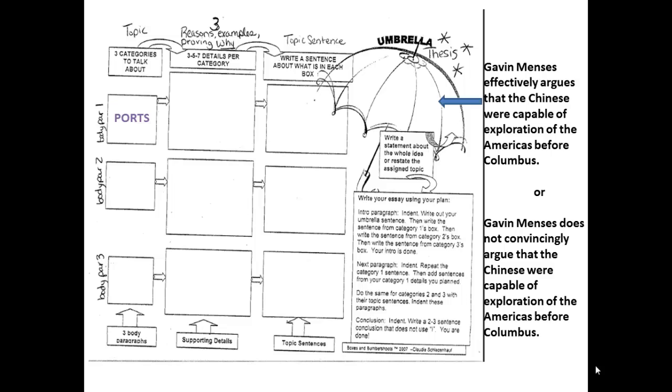If I were to choose that he did persuade me, my first reason might be that he was able to effectively explain the ports. So I put ports in the first one. Then I need to explain what he said about the ports. I need to give examples as to why that was persuasive. Now I can get these from the chart that I filled out while watching the movie. And then I just need to translate this onto this graphic organizer.